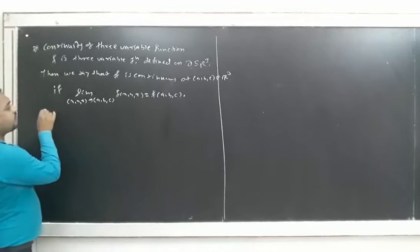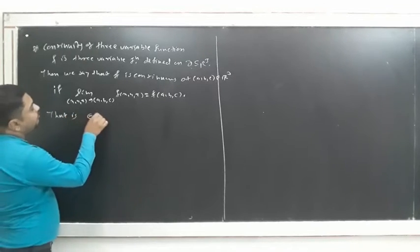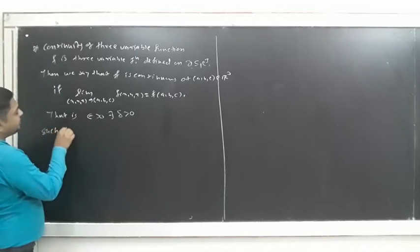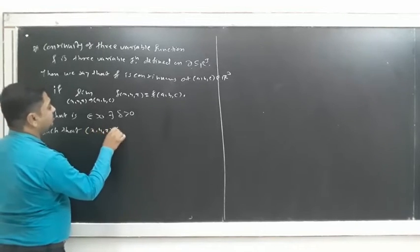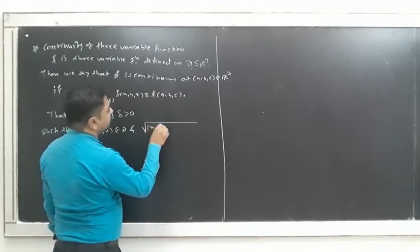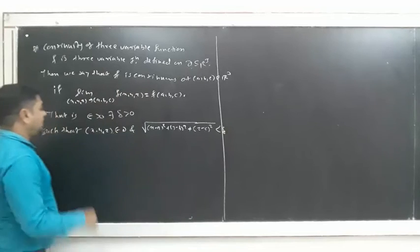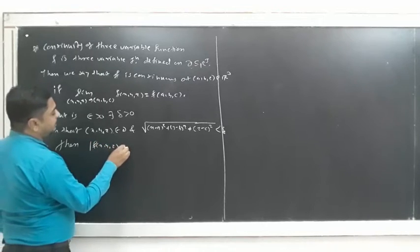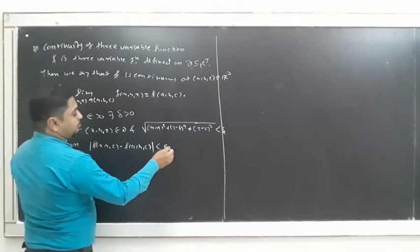How we write the precise epsilon-delta definition: for every ε > 0, there exists δ > 0 such that for all (x, y, z) in domain D, if √((x−a)² + (y−b)² + (z−c)²) < δ, then |f(x, y, z) − f(a, b, c)| < ε.